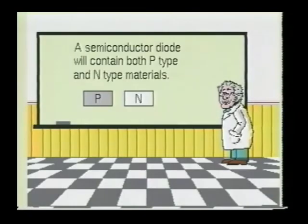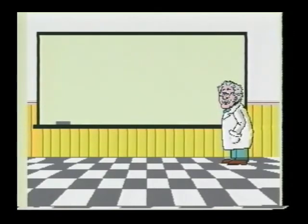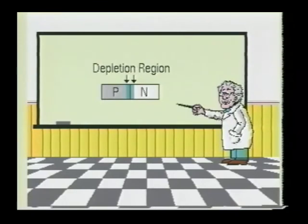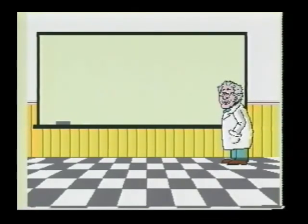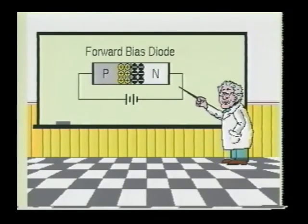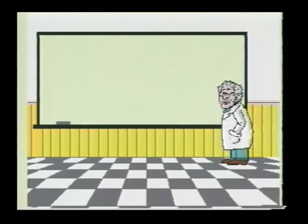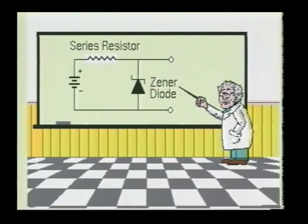Before examining more complex semiconductor devices, we will quickly review the material on the diodes just discussed. A semiconductor diode will contain both an N-material and a P-material. The area at which the two materials are joined is termed the P-N junction. When the two types of semiconductor materials are bonded together, a depletion region is formed. The depletion region will have a deficiency of majority charge carriers. When the diode is forward biased, the majority charge carriers are pushed toward the P-N junction, which reduces the depletion region. When the diode is reverse biased, the majority charge carriers are pulled away from the P-N junction, thereby increasing the size of the depletion region. The Zener diode is designed to operate in its reverse bias condition and must have some form of resistance in series between it and the power source, or the device could become destroyed.